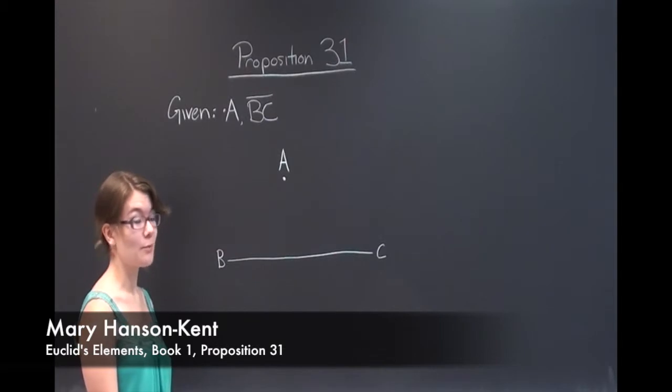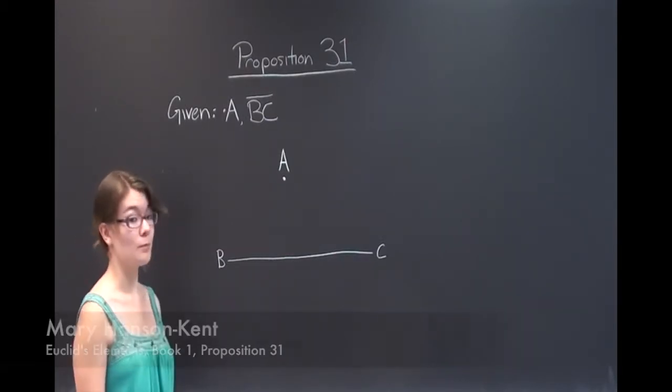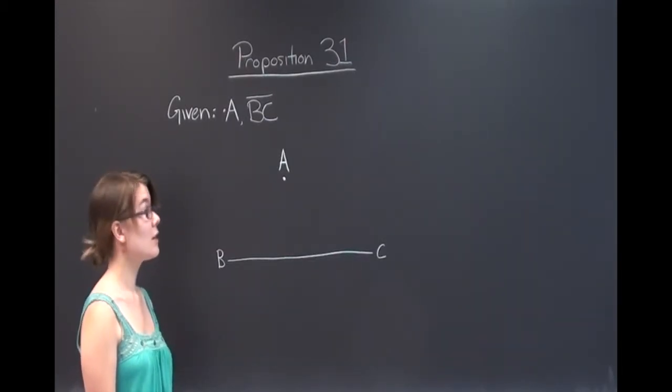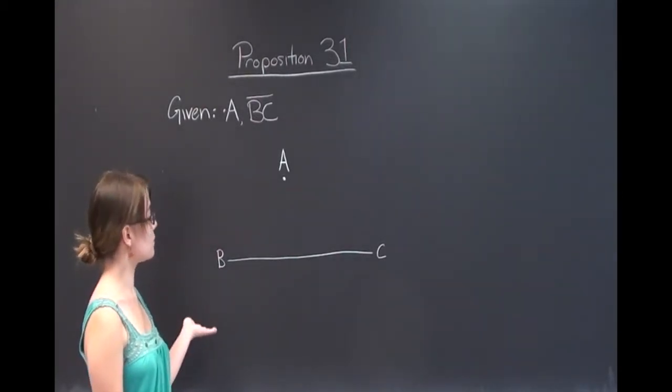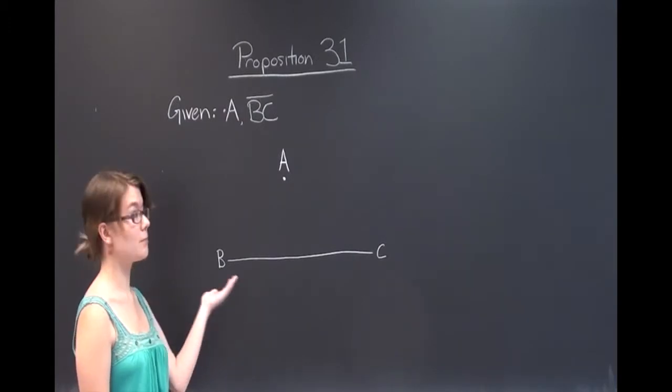Today I'm going to be demonstrating Proposition 31 from Book 1 of Euclid's Elements. The goal of this proposition is to construct a line parallel to BC through point A.